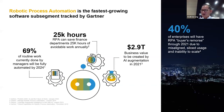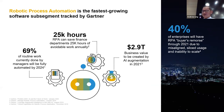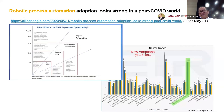Looking at research figures: Gartner, the world's biggest IT research firm, predicts that 69% of the managerial work currently done by managers will be fully automated by RPA by 2024. Gartner also says AI augmentation will create 2.9 trillion US dollars in business value — quite a huge impact on the world and different companies.